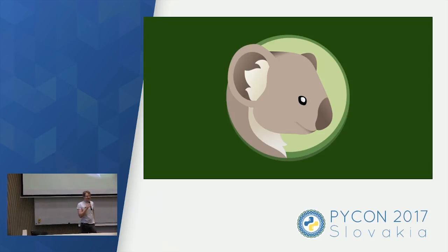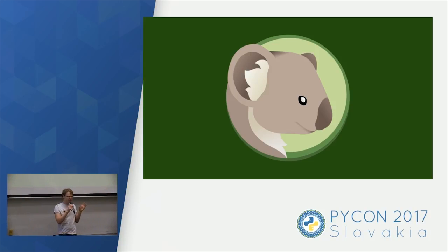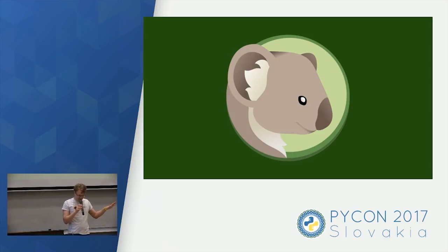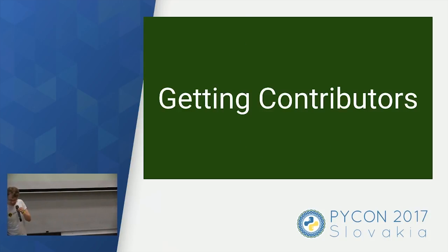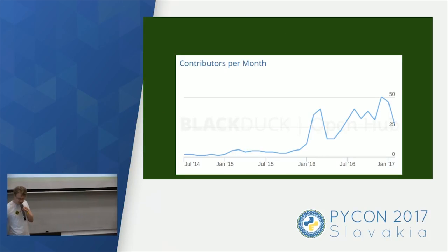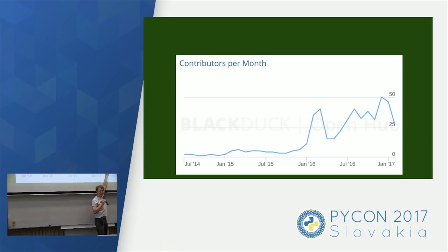I am the founder of the Koala open-source project, and something interesting happened last year. In the beginning of last year we had about four to six contributors total, and by the end of the year we had over 300. This is the contributions-per-month graph, and it's the kind of growth you might want for your own open-source project.